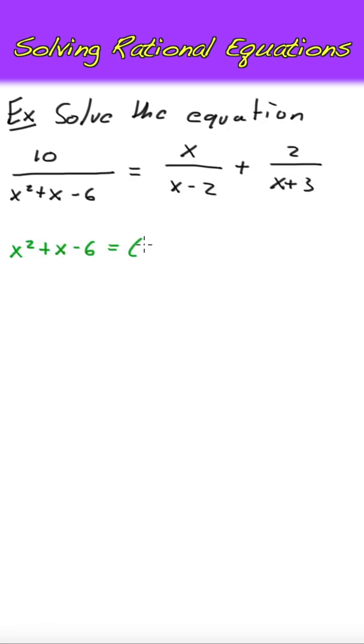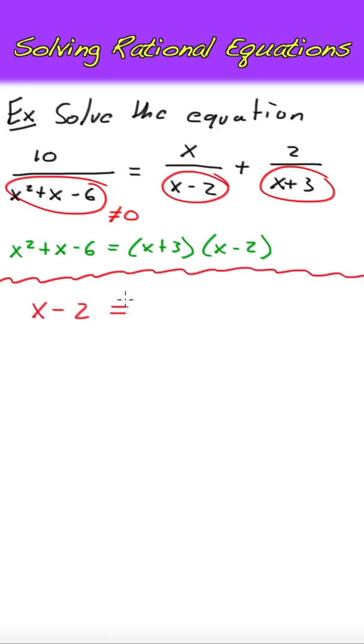We'll factor x squared plus x minus 6 to simplify. Then, we must consider the domain of rational expressions, excluding any solution that causes division by 0, so 2 and negative 3.